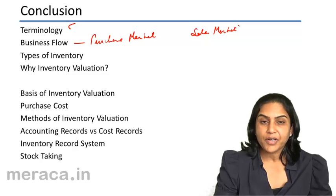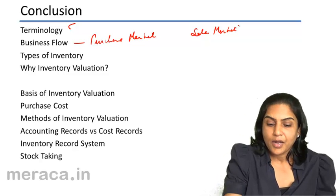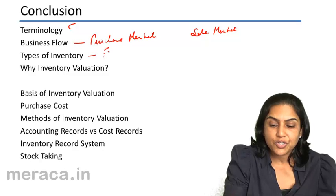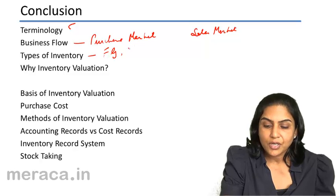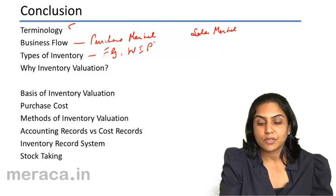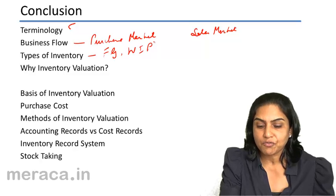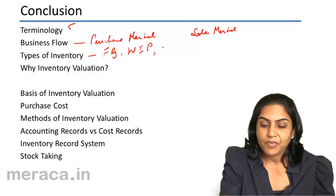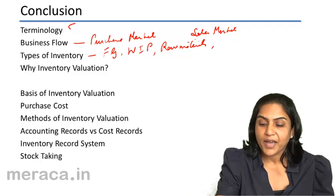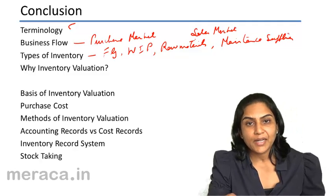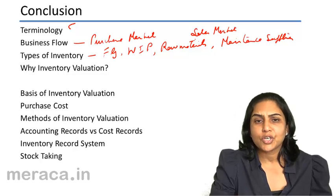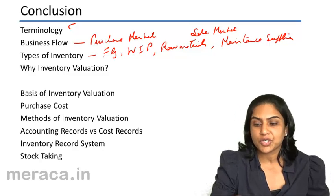We discussed the types of inventories. There would be finished goods in the case of both a trader and a manufacturer. We have work in progress — goods in the process of production for sale. We have raw materials. And we also have maintenance supplies, which includes nuts, bolts, tools, etc., to run machinery.